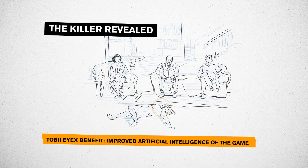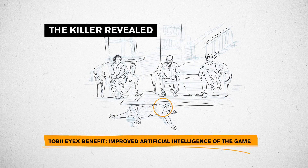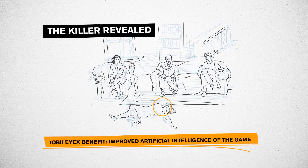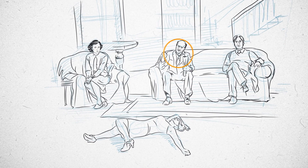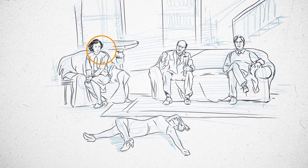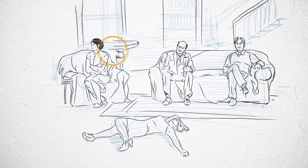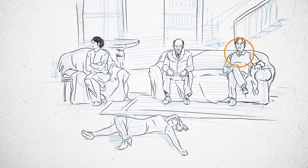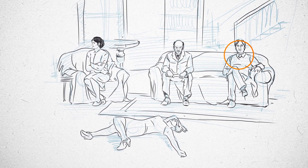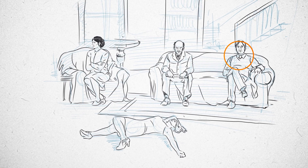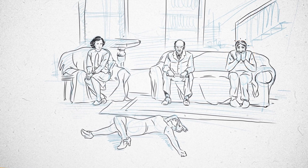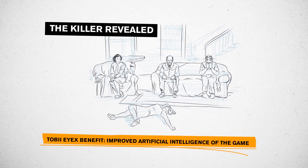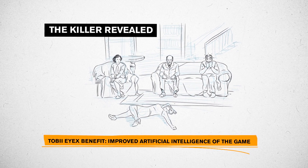The Killer Revealed. You're at a crime scene investigating a murder, looking at the suspects and searching for clues. Suddenly, the guy that you're looking at starts to squirm and sweat. His facial emotions give him away. Busted!